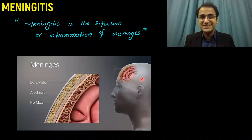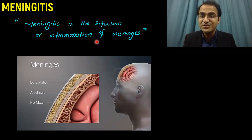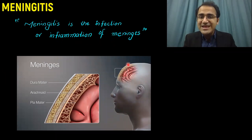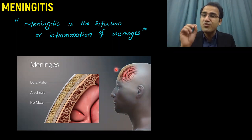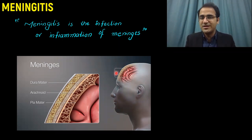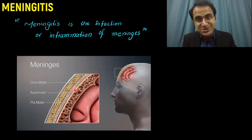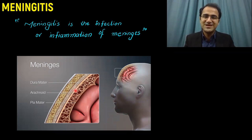What is meningitis? Meningitis is an infection or inflammation of the meninges. The meninges are the layers that surround and protect the brain. These layers include the dura mater, arachnoid mater, and pia mater. Any infection or inflammation of these layers is called meningitis.